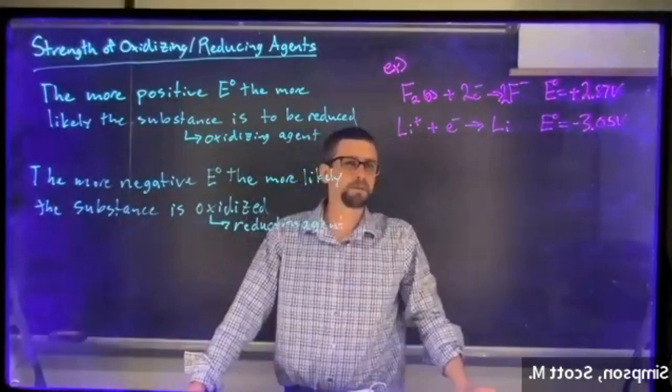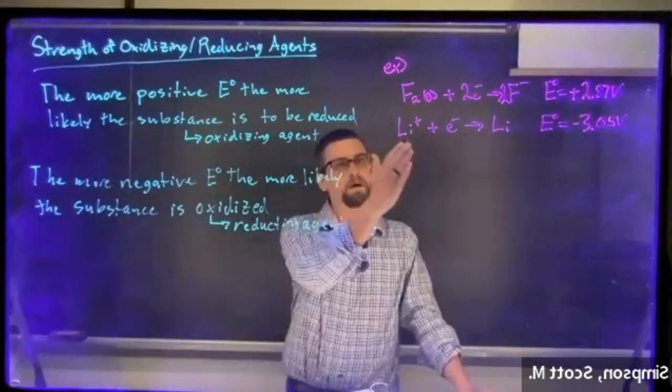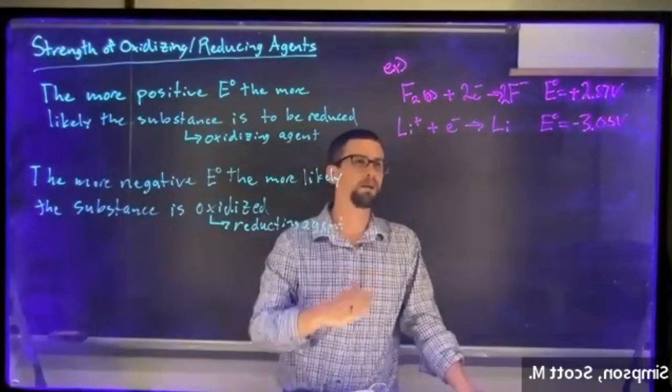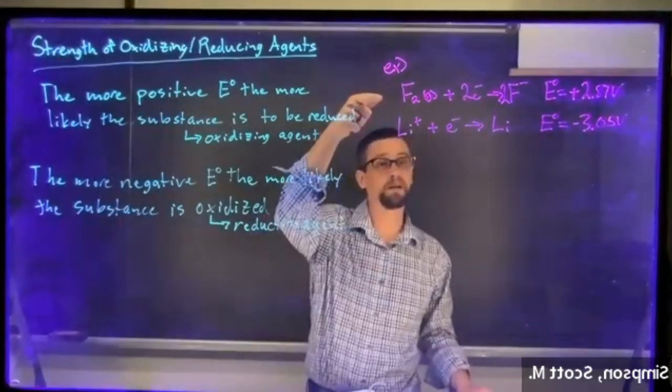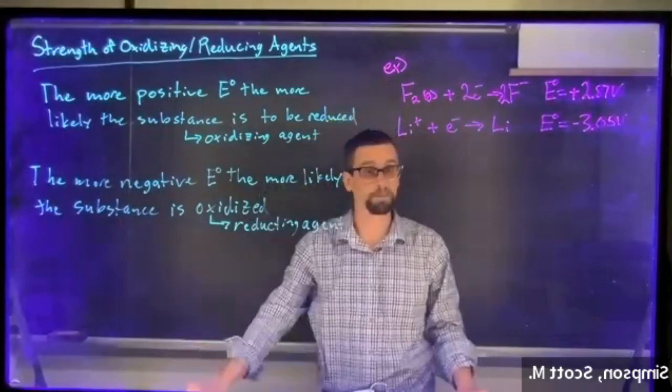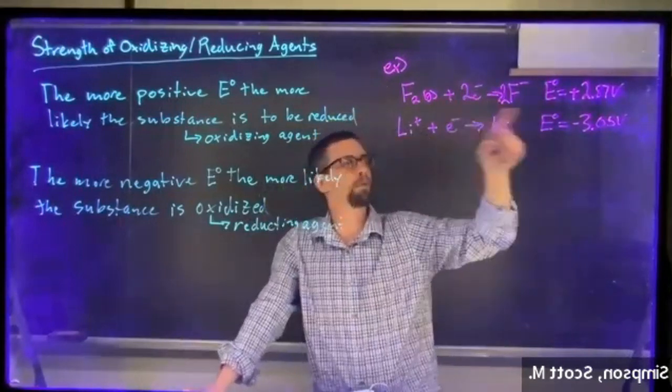These are good examples because we know lithium is a metal, it likes to readily give up an electron. Fluorine is highly electronegative, it wants to accept electrons.